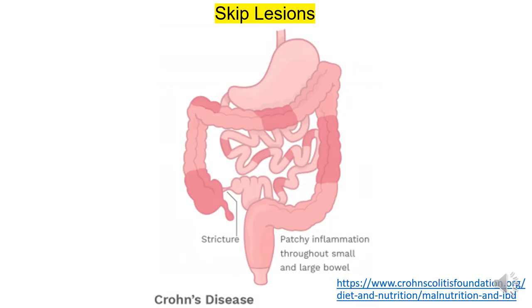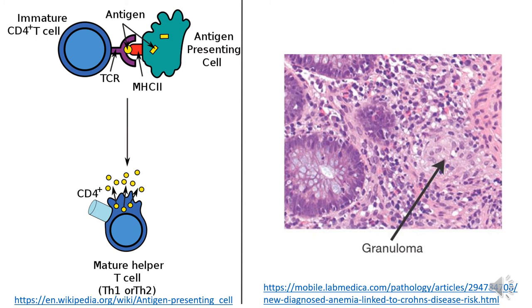This slide shows the skip lesions, which are patches of inflammation. The affected areas are the ascending and transverse colon of the large intestine, along with the ileum of the small intestine. It is important to note that these lesions are not continuous, meaning there will be certain parts of the affected organ that are unharmed. To the left is a visual of the antigen-presenting cell binding to the antigen in yellow on the MHC2 receptor in red. The immature CD4 T cell in blue binds to the antigen-presenting cell, becomes the mature T helper cell, and the yellow dots are those inflammatory mediators. To the right, that shows a granuloma — a collection of immune cells that have attacked bacteria.